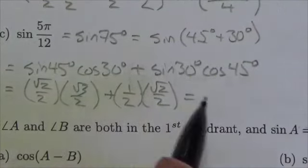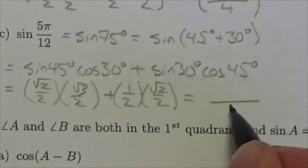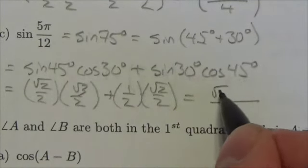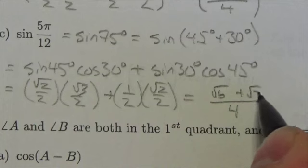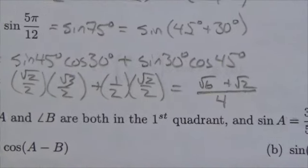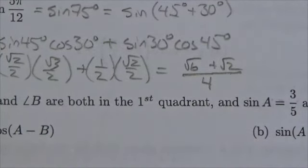And so now when you multiply this all out here, notice we're getting a common denominator of 4. And we're going to get root 6 here and a root 2 there. And so there we go. There's the exact form of our answer.